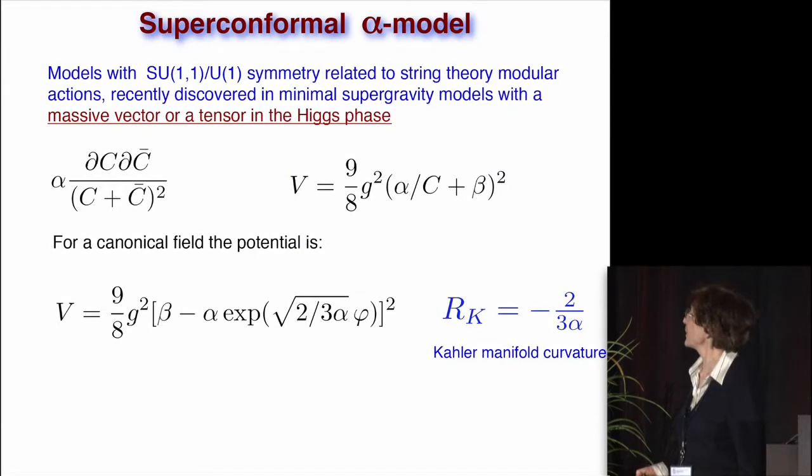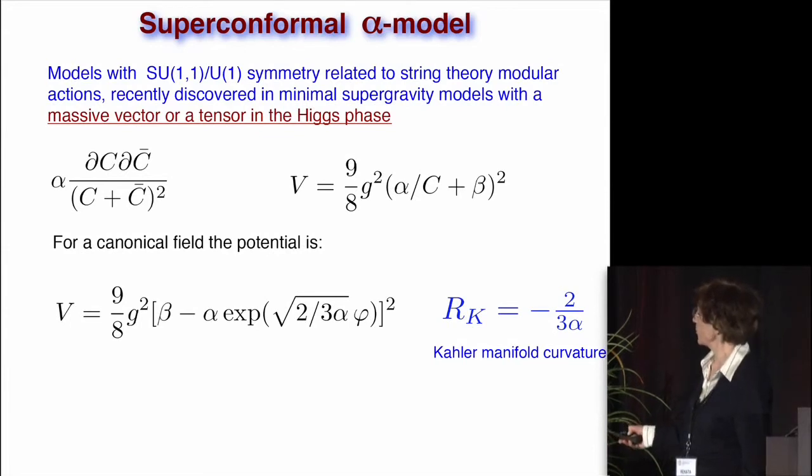And so later on, we moved a little bit. This is one of the models which may be particularly interesting from string theory perspective. This is what happens here. You start. We call this superconformal alpha model. So you start with SU(1,1)/U(1) symmetry, and every string theorist has seen it. And then you add a very interesting Higgs effect so that you have either massive vector or massive tensor. And this is your kinetic term, and there is a factor α in front. And the potential is rather simple. Then you move to canonical field, and you find exactly the same structure you have seen before. But now there is this new factor α here. And it turns out to be a curvature of the Kähler manifold, which is rather interesting.